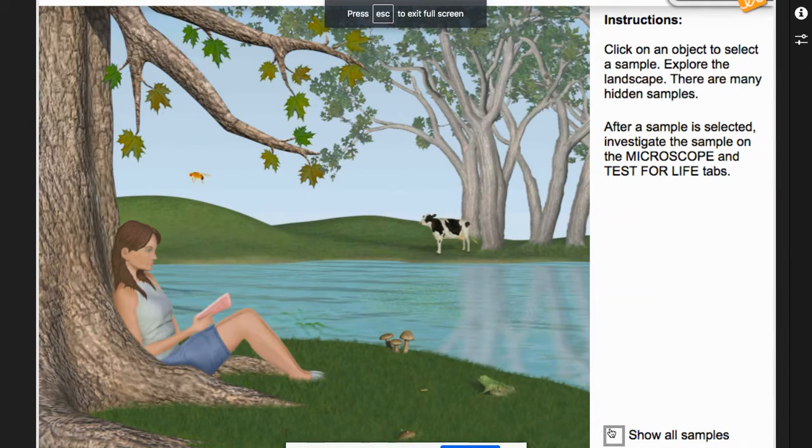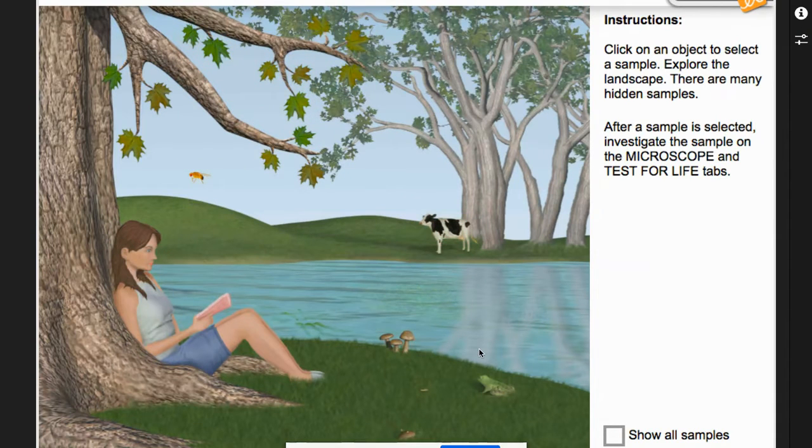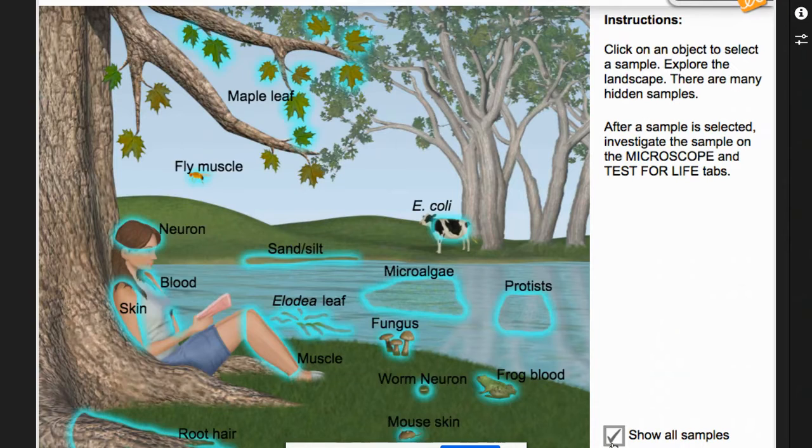When you get on here, click on Show All Samples. That will help you see all of the things that you can test on the microscope or look at on the microscope. If you do not have Show Samples, it will kind of show up but it's like a guessing game. So I like to click on Show Samples. I don't care what you look at—you can look at them all, you can look at two, you can look at one—but you need to try this out.